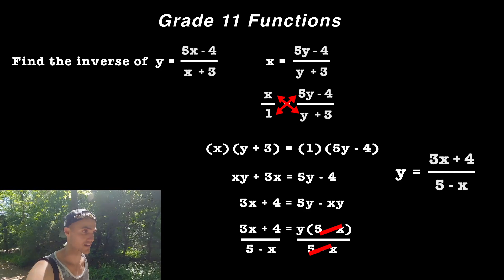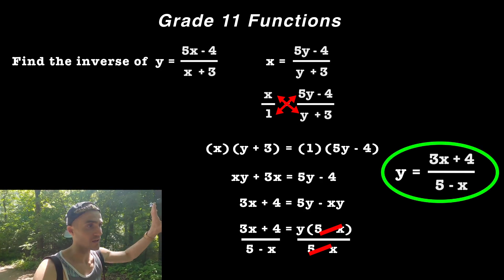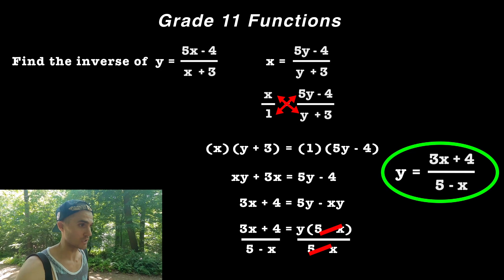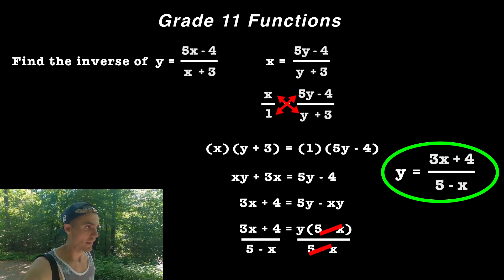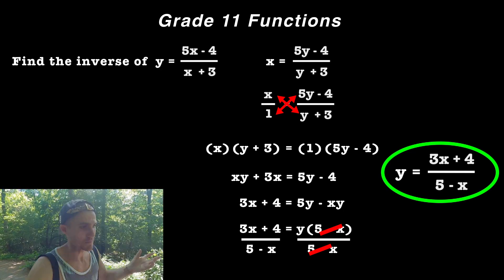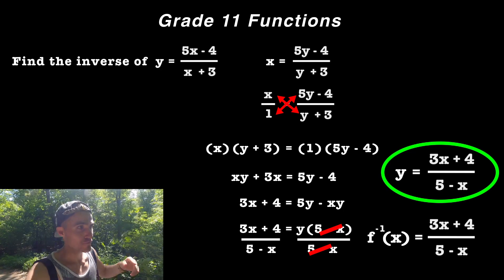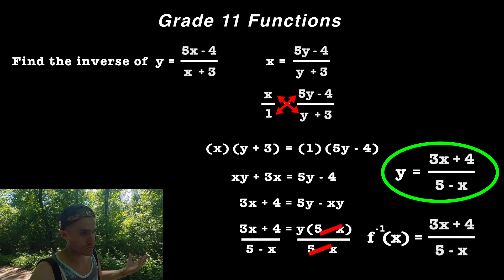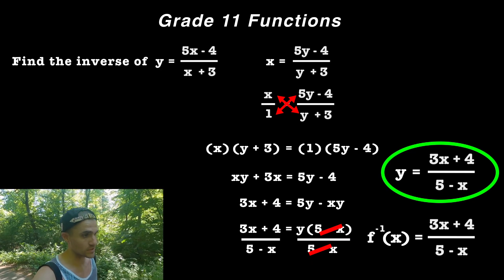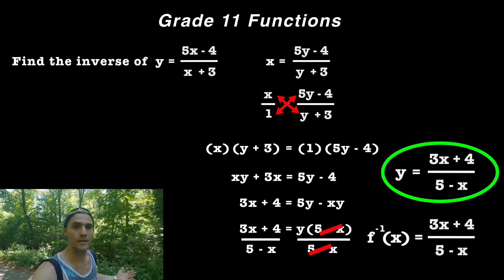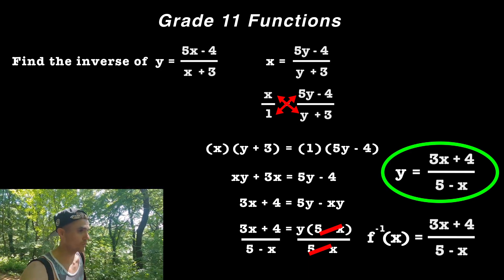And so we have isolated for the y that is equal to 3x plus 4 over 5 minus x. And so that ends up being the inverse. So we started with a rational function, the inverse of it is a rational function as well. And then sometimes you'll see that symbol or that notation used for inverses, f to the negative 1 of x. And so you would just write f to the negative 1 of x is equal to 3x plus 4 over 5 minus x. You got your inverse.